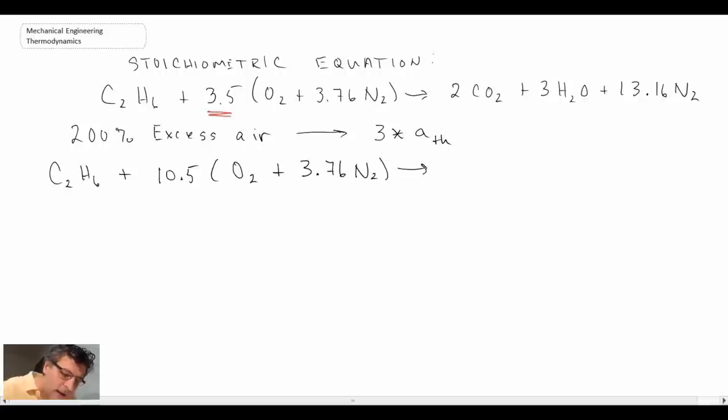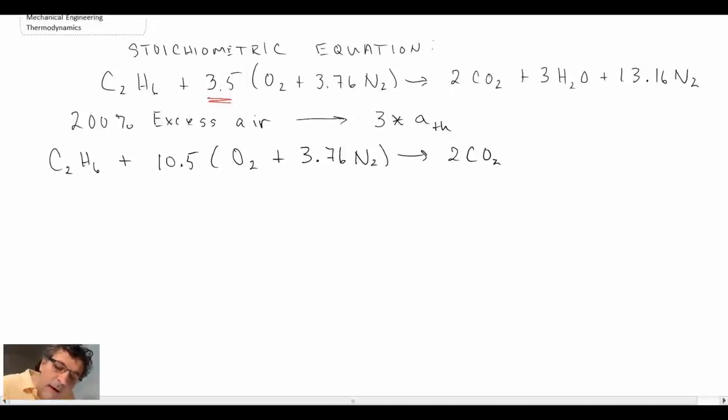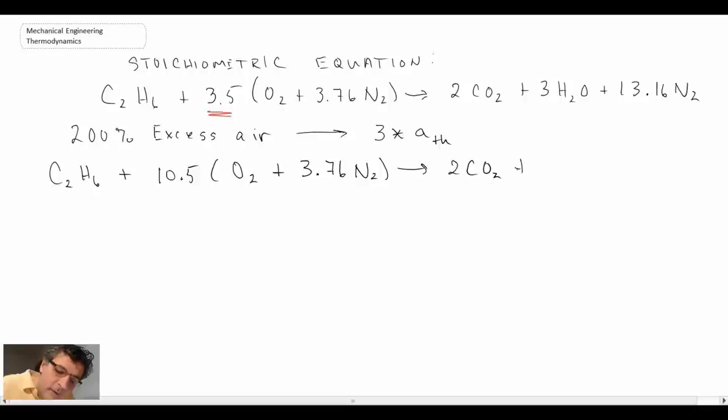So we have 10.5 multiplied by the atmospheric air. And then on the right hand side of the equation, the carbon is not going to change. So we can keep the 2 CO2. The water vapor will not change. So we keep 3 H2O.